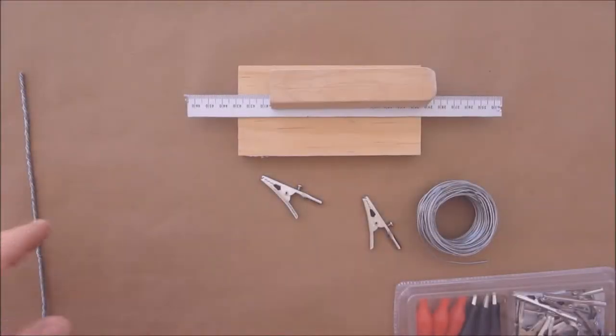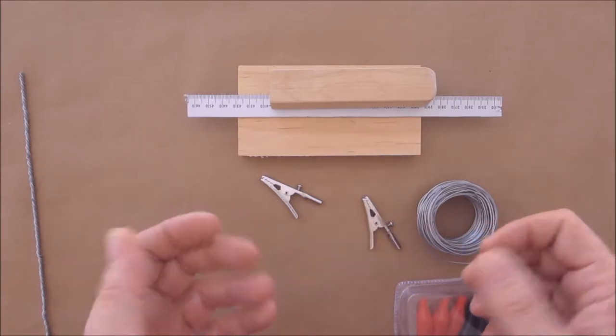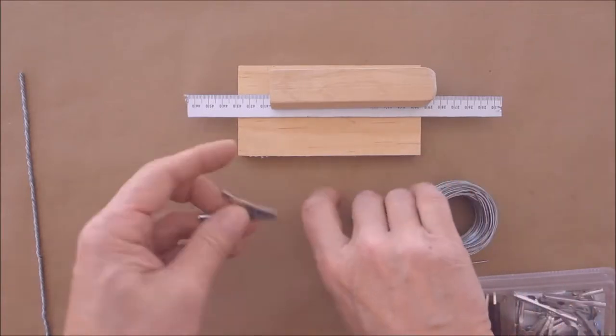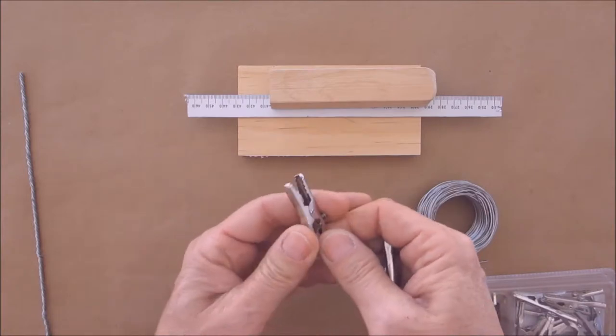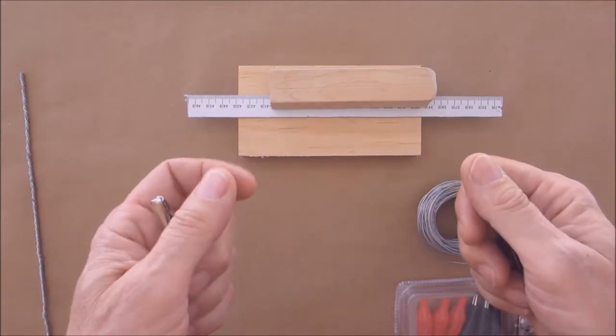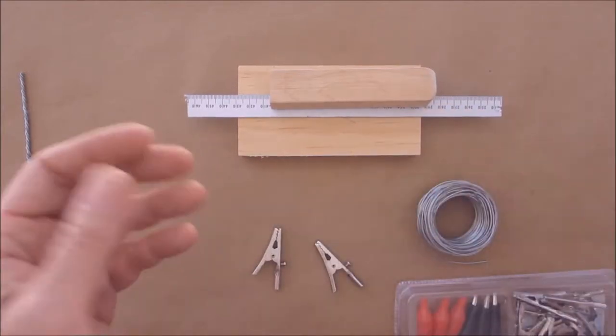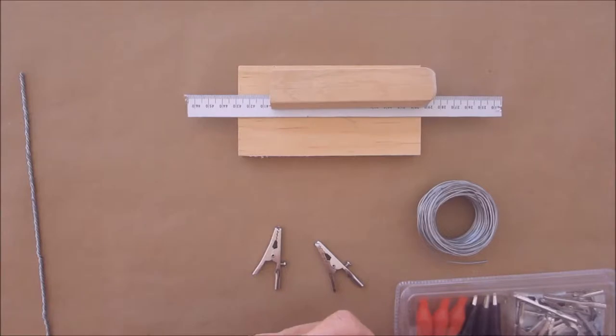Hello everyone, welcome back. Today we're going to make an alligator clip stand. It's a very useful item to have if you need extra hands to hold something. We're going to be using these two alligator clips. They'll go on to a piece of wire and you can bend them into whatever shape you want.